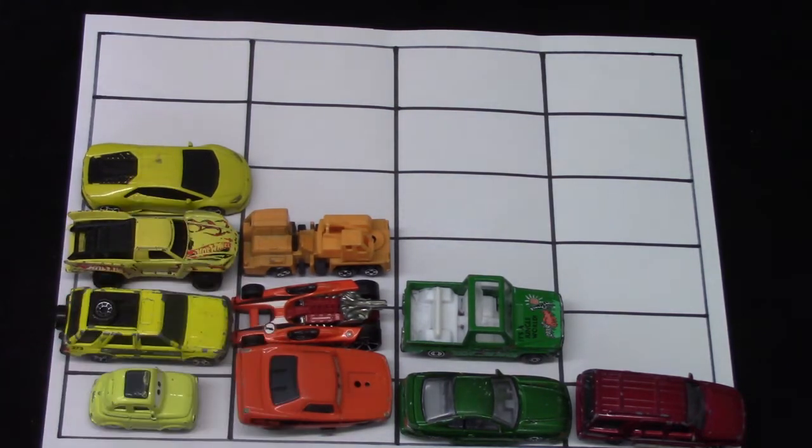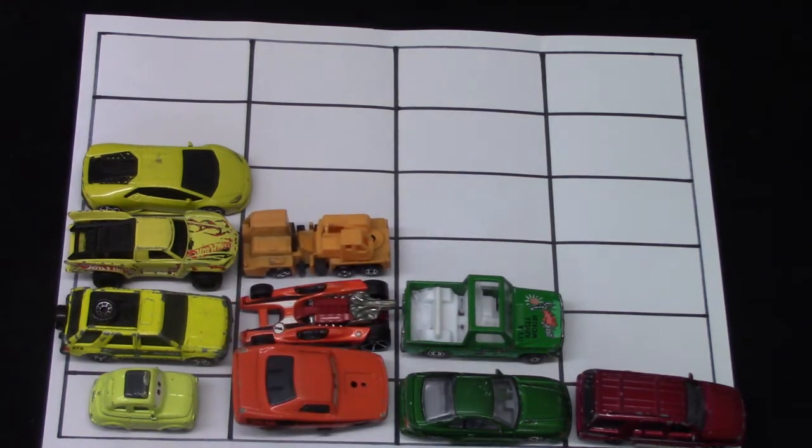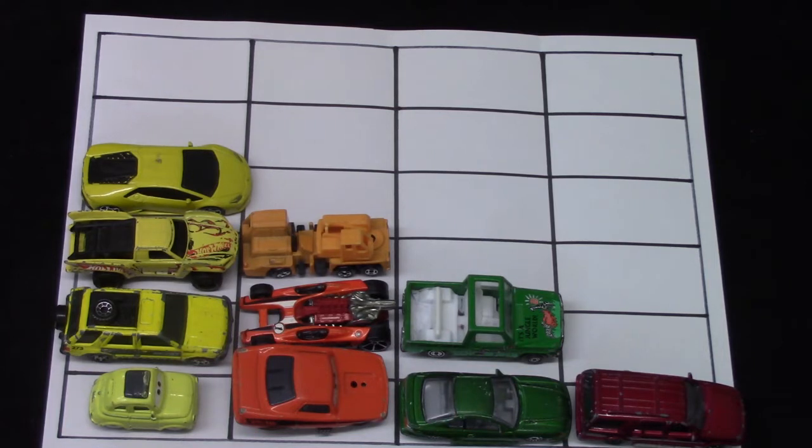I have graphed the cars. I have one, two, three, four yellow cars, one, two, three orange vehicles, and one, two green vehicles, and one red vehicle.